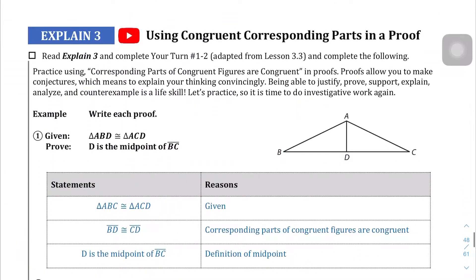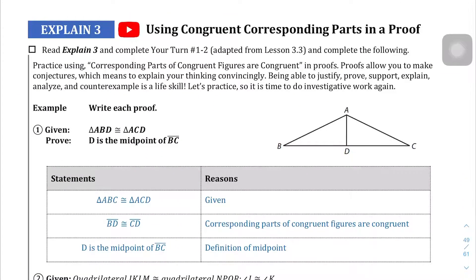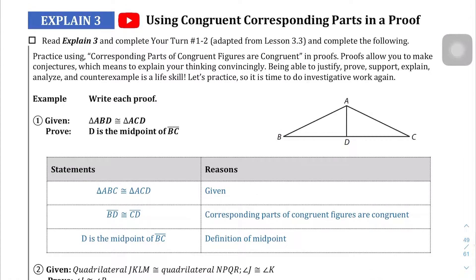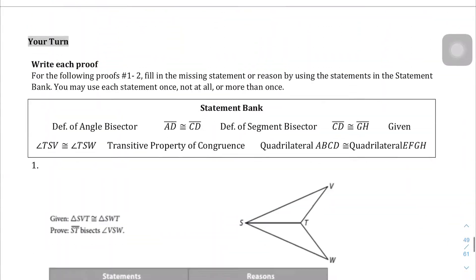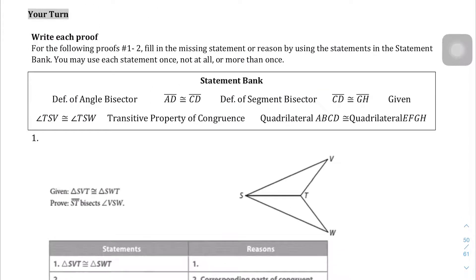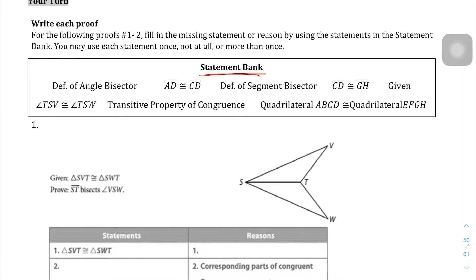Moving on, in Explain 3, we're going to use congruent corresponding parts in a proof. As usual, I will let you read those explain parts on your own. But, we're going to jump into the Your Turn questions on page 50. We're going to write each proof. We have a statement bank here with all the different statements that we can use. So it's not like we're completely walking in the dark here. But, if you've never done a proof before, we're literally just taking these statements and trying to, where we start with a statement and then we're trying to get to a destination. We're trying to prove a specific thing.